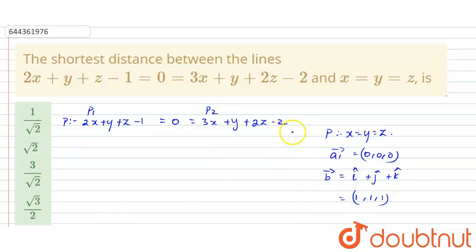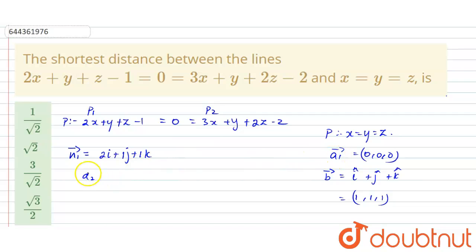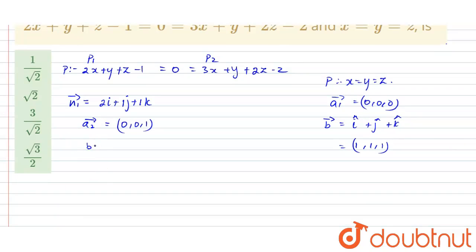Now for Plane 1, I take the normal vector n1 = 2i + 1j + 1k. For Plane 2, the position vector a2 = (0, 0, 1), and the normal vector n2 = 3i + j + 2k.